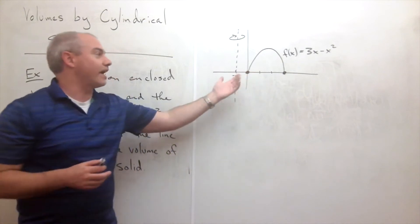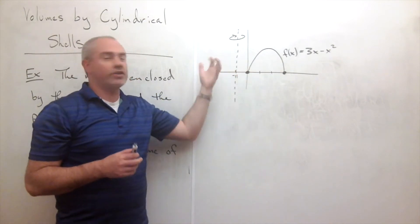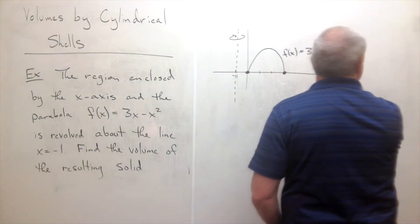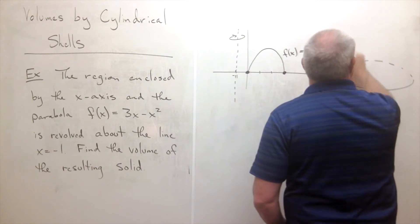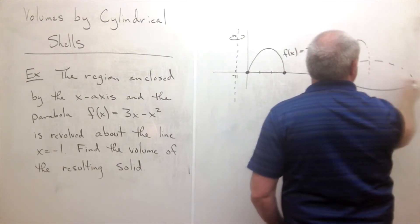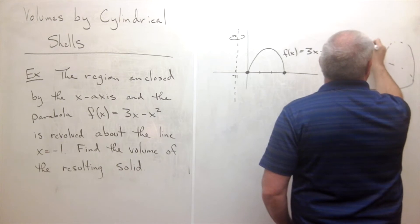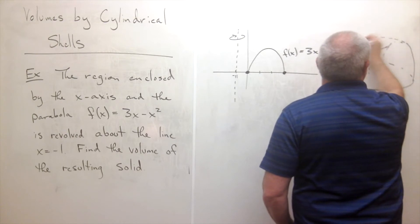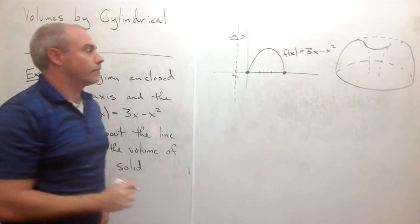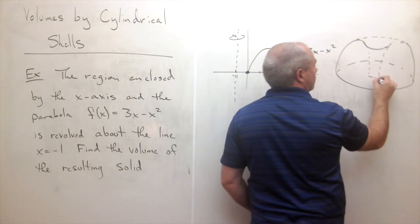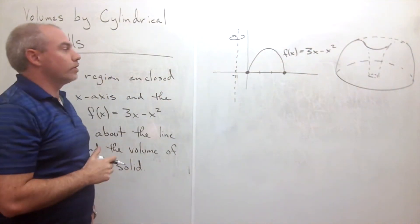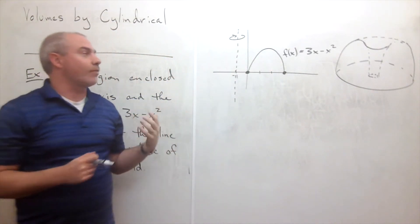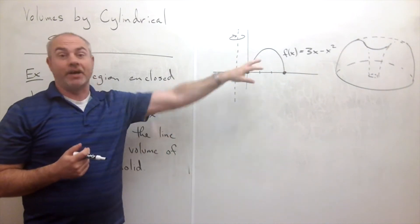The way I think about it, the resulting shape looks sort of like a bundt cake. Let me draw it — it looks something like this, with a little hole in the middle. So once I revolve this region, I get my bundt cake shape, and I want to know: what is the volume of that bundt cake?